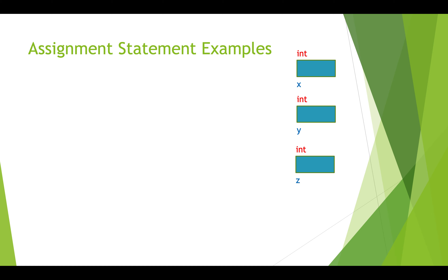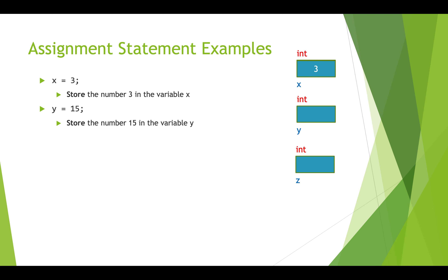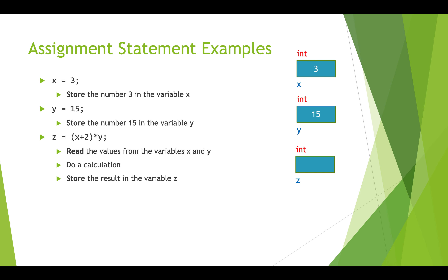Here are more examples. We store 3 in variable 'x' and 15 in variable 'y'. Then for 'z' we write: 'z = (x + 2) * y'. The compiler grabs x (which is 3), adds 2 to get 5, grabs y (which is 15), multiplies 5 by 15 to get 75, and assigns 75 into 'z'.